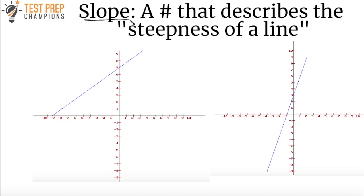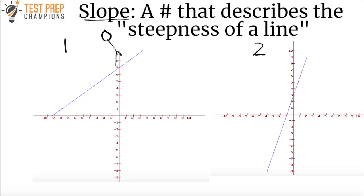What do I mean about the steepness of a line? Well I have two graphs here — let's call this graph number one and let's call this graph number two. Don't worry about any of these numbers, just focus on the line in graph number one. See this blue line right here — I want you to imagine that this blue line is a hill, and imagine that you're going to run down this hill. I'll draw a stick figure here — just imagine that you want to run down this hill.